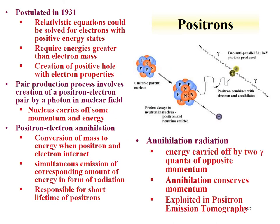An overview of positron decay is shown here. The key is a positron-electron interaction that annihilates the antimatter positron with the matter electron, creating two photons at 511 keV — each having the mass-energy of the positron and electron — emitted 180 degrees from each other. This allows a specific energy of 511 keV to be evaluated, indicative of positron decay. The 180-degree geometry means a coincidence detection system can be set up: when photons are detected in an array 180 degrees apart, working backwards gives the location where the positron decayed, enabling high-detail imaging.